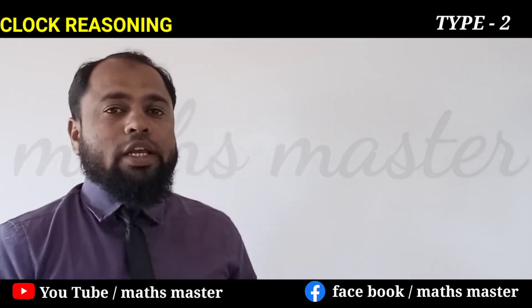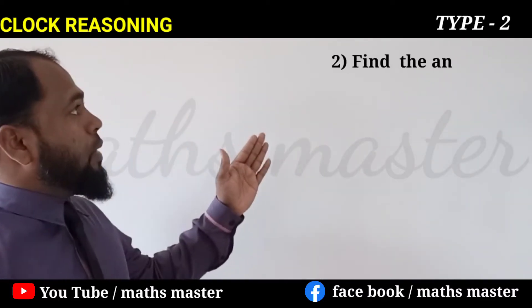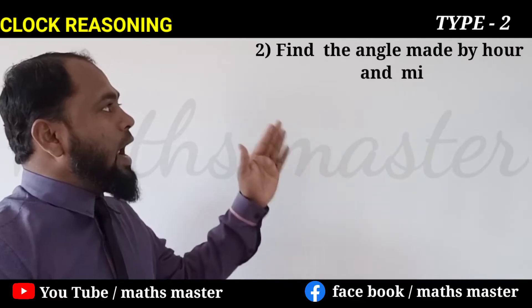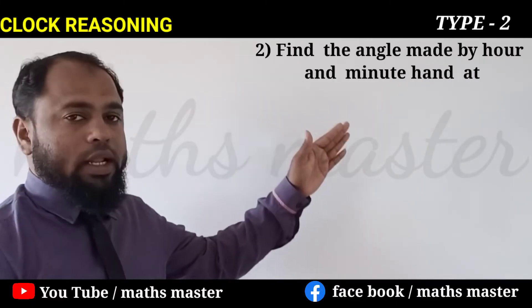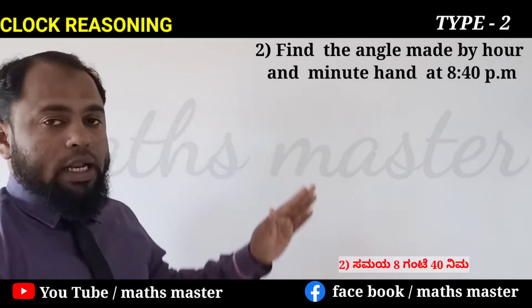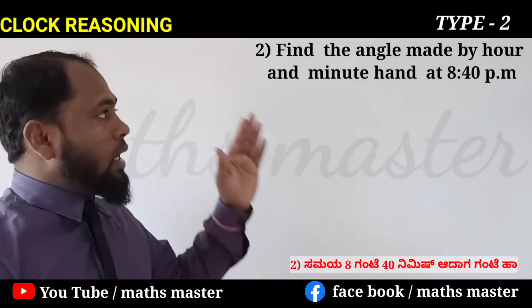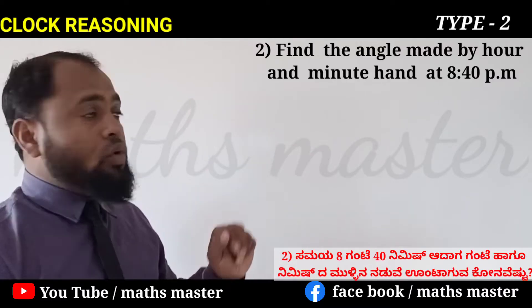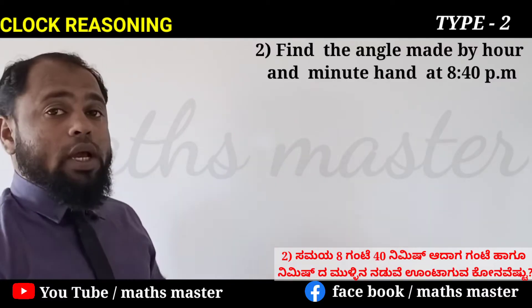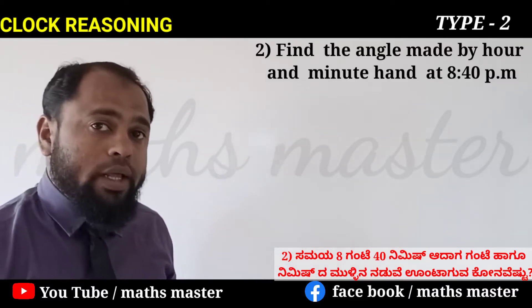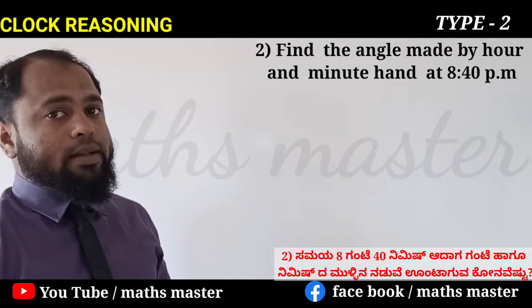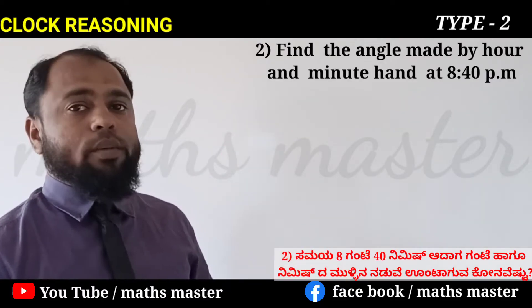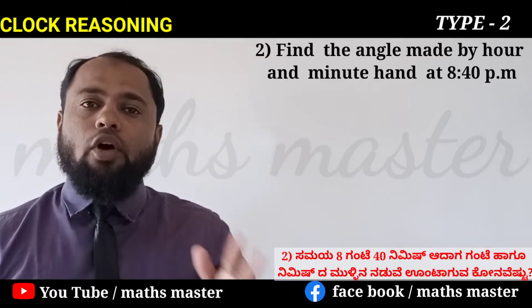The next question is: find the angle made by the hour and minute hand at 8:40. Use the same procedure and same method — follow the formula.